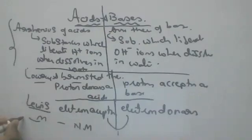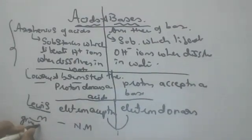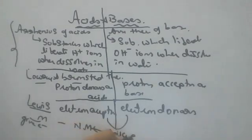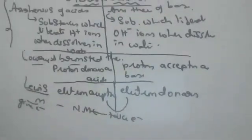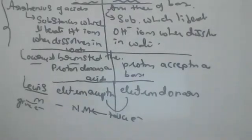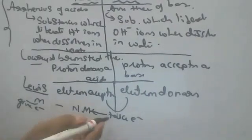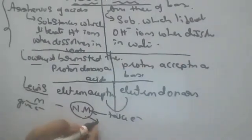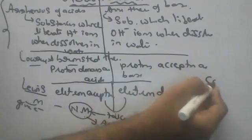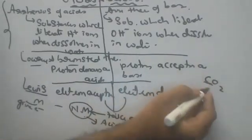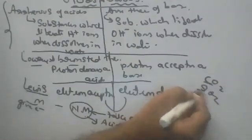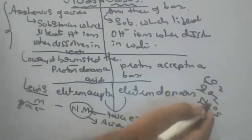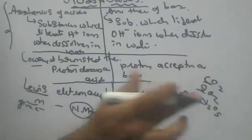Metals always give electrons and non-metals always take electrons — they do this to attain stability. That's why wherever you see non-metals, they are acids. Carbon dioxide is an acid — carbon is a non-metal. Sulfur dioxide is an acid — sulfur is a non-metal. N2O5 is an acid — nitrogen is a non-metal.